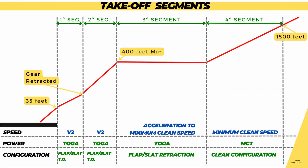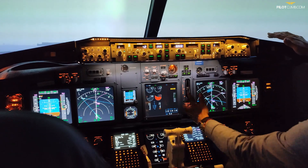The first take-off segment, as we said, starts from 35 feet screen height. So you are on the take-off run, you have an engine failure, at V1 you continue, so you take off. When you reach 35 feet above the ground — a screen height of 35 feet — that is when your first take-off segment starts. The first take-off segment starts at 35 feet screen height and finishes when you retract the landing gear. So the purpose of the first take-off segment is gear retraction.